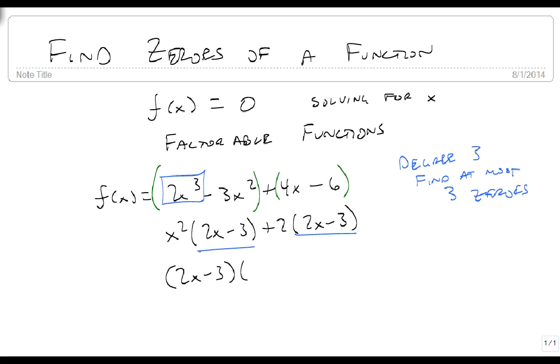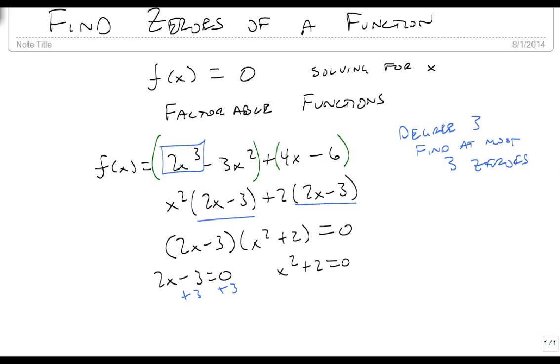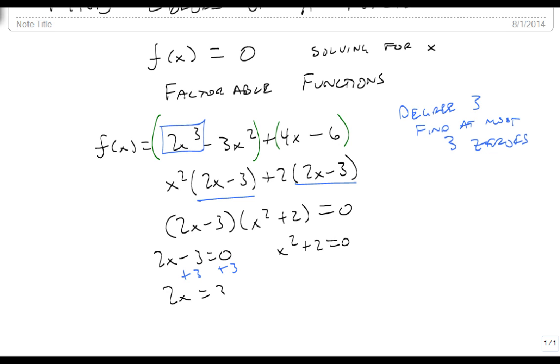So 2x minus 3 times x squared plus 2 equals 0. Well, this means that 2x minus 3 equals 0, and it also means that x squared plus 2 equals 0. This one becomes real easy. Add 3 to both sides, so that 2x equals 3, divide by 2, and x equals 3 halves.